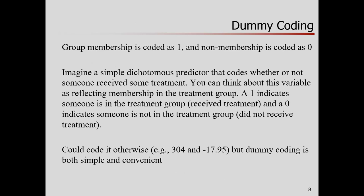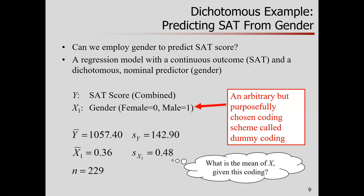The most popular way of doing this kind of coding is called dummy coding. This is where group membership is coded as one and non-membership coded as zero. So I have a predictor that's a dichotomy, two category, whether or not you've received a treatment. A one indicates you've received a treatment and a zero indicates you did not receive a treatment. I could code it 01 or 304 and negative 17.95, but it's arbitrary. 01 has some benefits for interpretation, as you'll see.